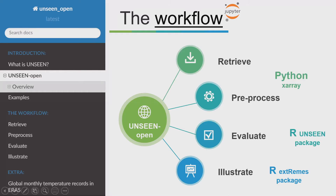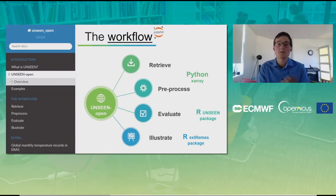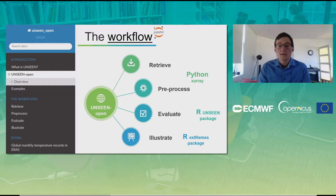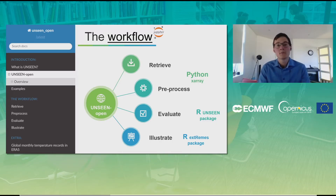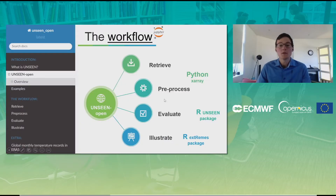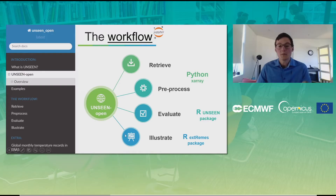The workflow consists of four steps. The first is retrieving the data — we make use of Copernicus open data, specifically SEAS5 and ERA5. For unfamiliar users it might be hard to retrieve the right data, so this step makes it easy. In the second step we pre-process, taking the correct spatial and temporal average. Thirdly, we evaluate — a very important step to assess the consistency of the model to observations, for which we developed an R package. Fourthly, we apply extreme value statistics using the R-extremes package.